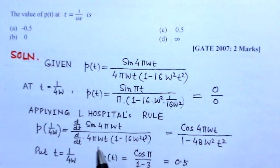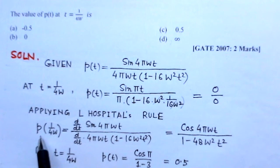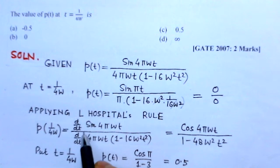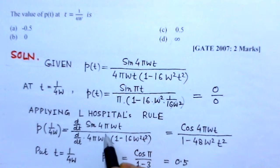So we apply L'Hospital's rule, that is to find the value of P(t) at t equals 1 over 4W. We take differential of numerator and denominator and then try to substitute the values.